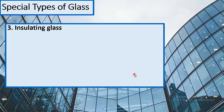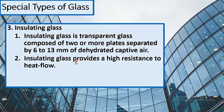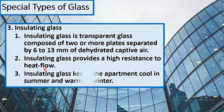Insulating glass is transparent glass composed of two or more plates separated by 6 to 13 mm of dehydrated captive air. Insulating glass provides high resistance to heat flow and keeps the apartment cool in summer and warm in winter.